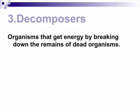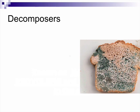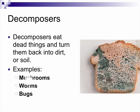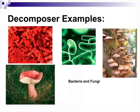Decomposers — these are nature's recyclers. They're organisms that get their energy by breaking down the remains of dead organisms, and we have to be very thankful they exist. They're like the garbage patrol: anything dead, they start breaking it down. Those nutrients get returned back to the soil, which starts the process all over again. Examples include mushrooms, worms, bugs, bacteria, and fungi that help break down dead organisms.